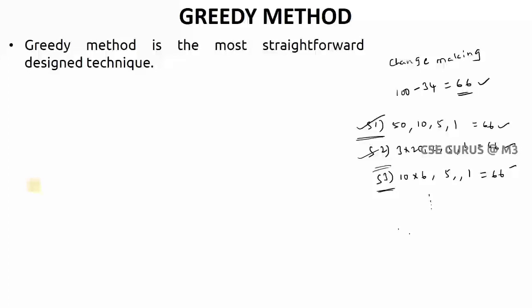If I consider the problem of change making, let us suppose you went to a shop and purchased some items for Rs 34. You don't have any change and you have given 100 rupees note. The shop owner has to give 66 rupees. How many ways can this 66 rupees be given by the shop owner?